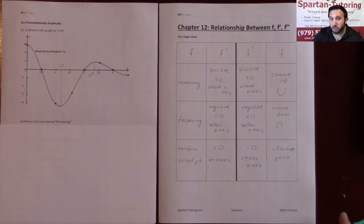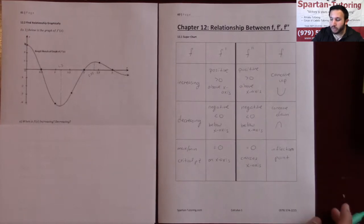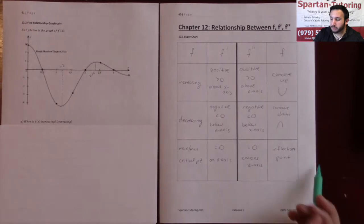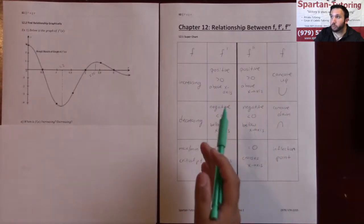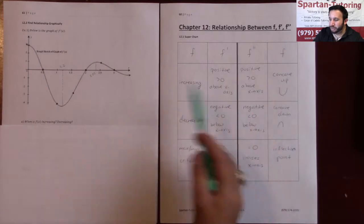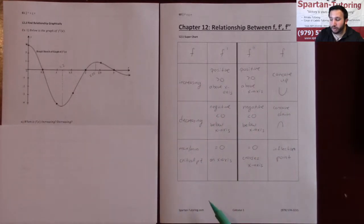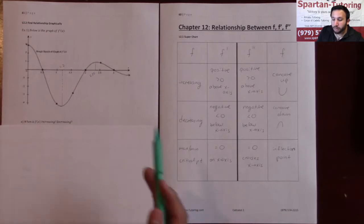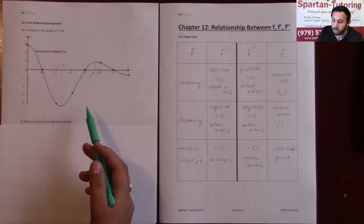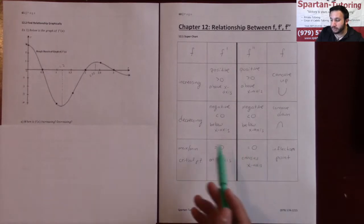Howdy, this is going to be part two on the relationship between f, f prime, and f double prime. If you haven't watched part one where I explained how to utilize this chart, definitely go ahead and do that. But all I'm going to do is literally just look. I don't even have to write anything down when dealing with these types of questions. As long as you have this chart, the answers will literally just present themselves to you.